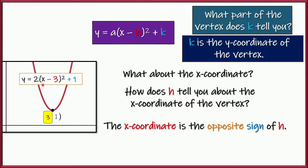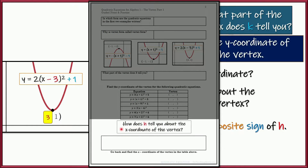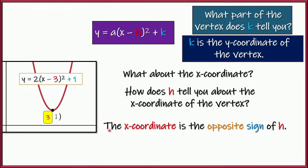The reason the x-coordinate is the opposite sign of h is that we're figuring out what value of x makes the expression in the parentheses equal to zero. That's why it is the opposite sign. In your guided notes there's a place to write how h tells you about the x-coordinate of the vertex: the x-coordinate is the opposite of the sign of h.